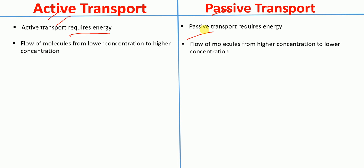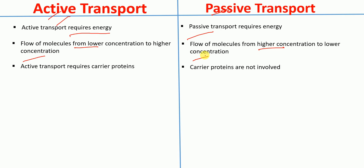In active transport, the flow of molecules occurs from lower concentration to higher concentration, and therefore there is a need for energy. Whereas in passive transport, the flow of molecules occurs from higher concentration to lower concentration.